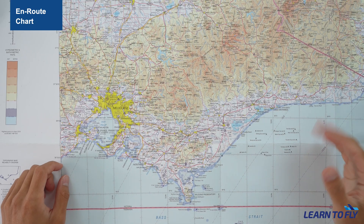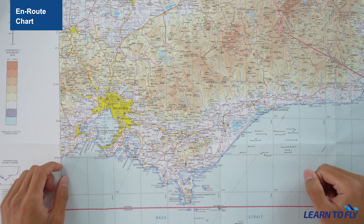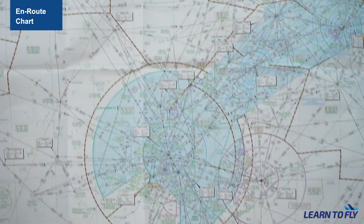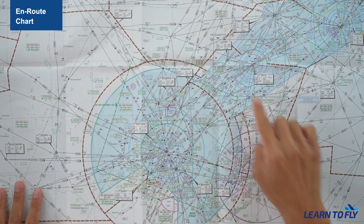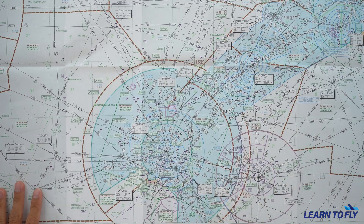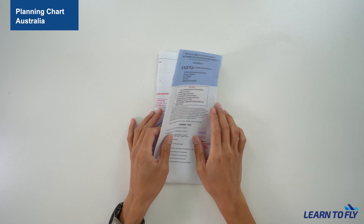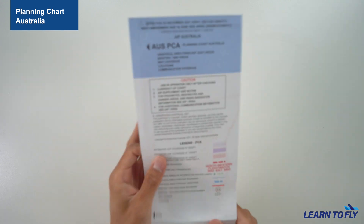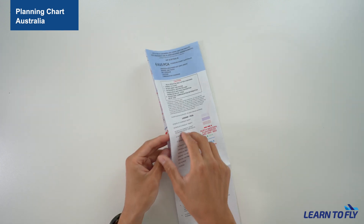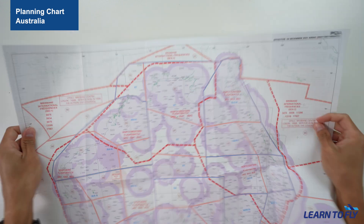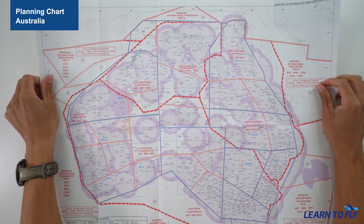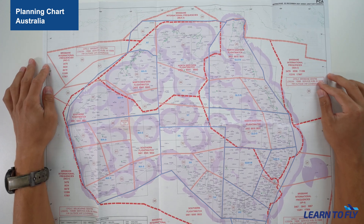When operating only on the WAC chart, we will need to use the ERC chart to identify airspace boundaries and frequency. The PCA chart, also known as the Planning Chart Australia, shows all of the airports around Australia and the different boundaries. It also allows us to interpret the weather and is particularly useful for determining area coverage along the route.